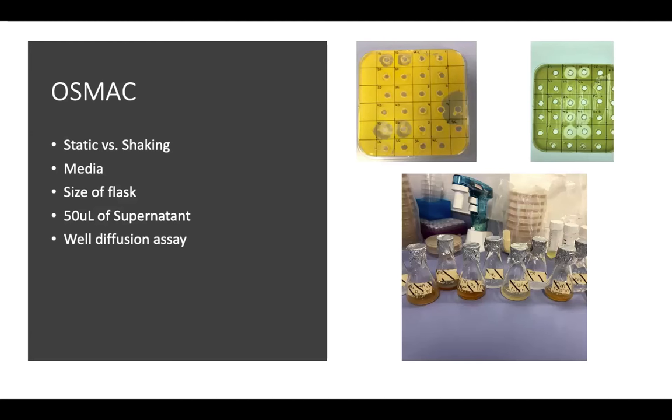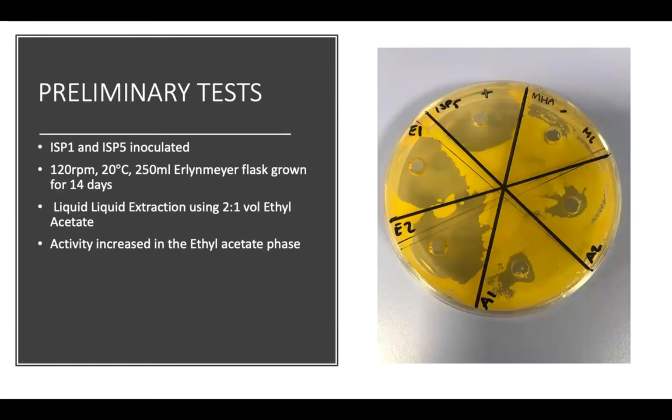This was then determined through a well-diffusion assay. I was able to determine that a flask with 250 mils shaking and left for 14 days in three different types of media gave the largest zones of inhibition. A preliminary test was carried out using medias ISP1 and ISP5, the two media that showed the largest zones of inhibition. The OSMAC culture conditions were employed and the supernatant tested after 14 days. A liquid-liquid extraction was undertaken to separate into polar and non-polar compounds. As you can see in the photo above, the ethyl acetate phase showed the greatest zone of inhibition.